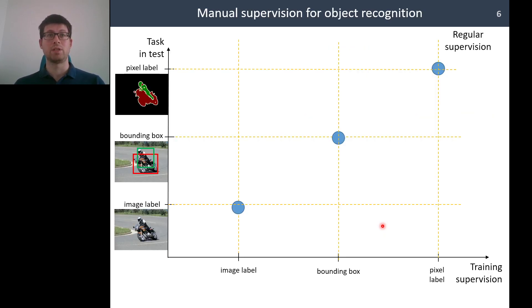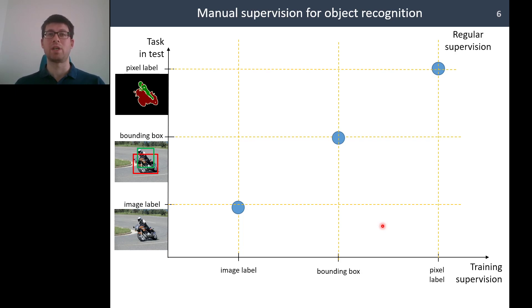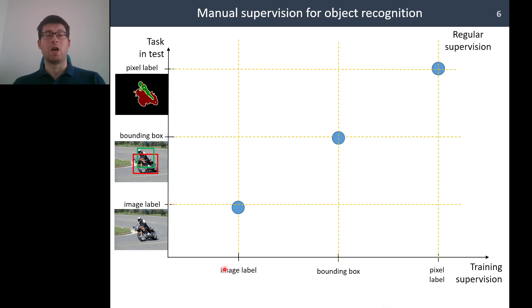Let's look more closely at three computer vision tasks. Here I am showing the standard annotation level for image classification, bounding box object detection, and semantic segmentation. For image classification, the standard supervision is image-level labels.